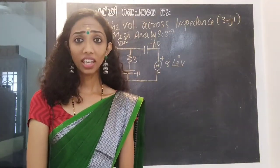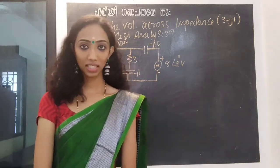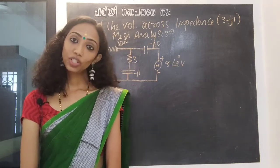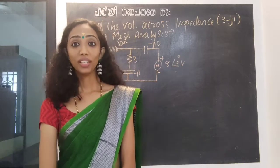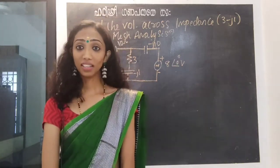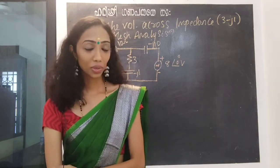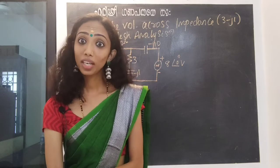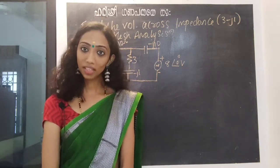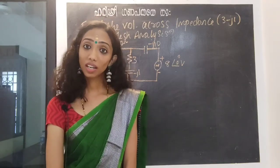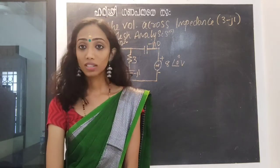Find the voltage across the impedance using mesh analysis. If we work here with voltage, we work here with mesh analysis — current and voltage. Because V is equal to I·R and P is equal to V·I.